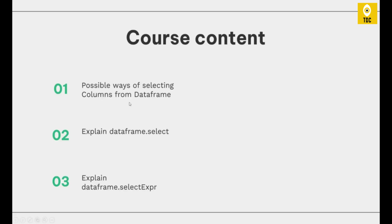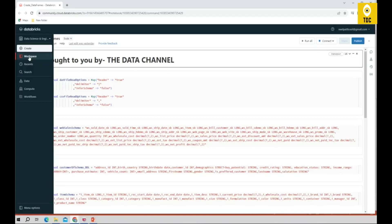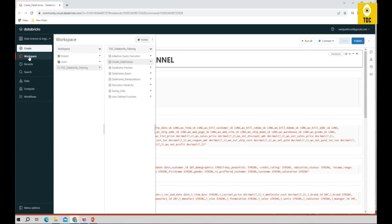In this video, we will see the possible ways of selecting columns from a DataFrame. We'll explain the concept of DataFrame dot select — there are multiple variations you can try with that. There is also a SQL-like syntax where you can use DataFrame dot selectExpr when selecting columns. Let's now switch directly into Databricks and see how we select the columns.